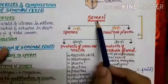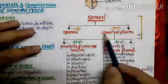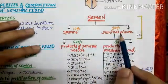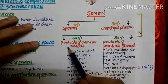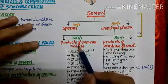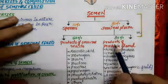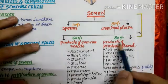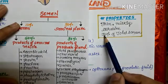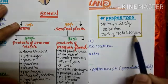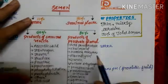The semen is formed by 10% sperms and 90% seminal plasma. The 90% seminal plasma is formed by products of seminal vesicles, contributing 60%, and products of the prostate gland, contributing 30%. So the prostatic fluid helps in the formation of 30% of the total semen.